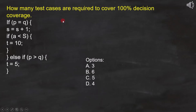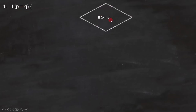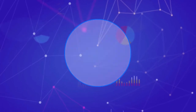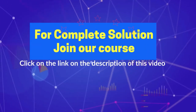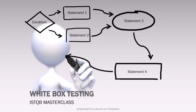In this question, we have to find how many test cases are needed to achieve 100% decision coverage. Let's first analyze the code and draw the flowchart. The first line is: if P equals Q. Since this is a condition, we represent it like this. Line number 2 is: S equals S plus 1. Since it is a statement, we place it like this. Line number 3 is also: S equals S plus 1.